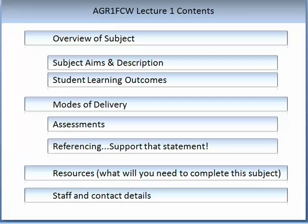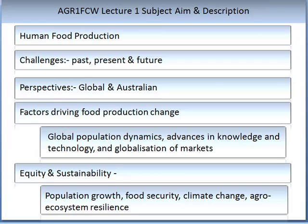This subject explores human food production, its current and future challenges from both the Australian and the global perspectives. Students will develop a comprehensive understanding of the evolution of human food production and the key factors driving change in food production systems. Contemporary food production drivers, such as global population dynamics, advances in knowledge and technology, and globalisation of markets, will be explored among other topics.